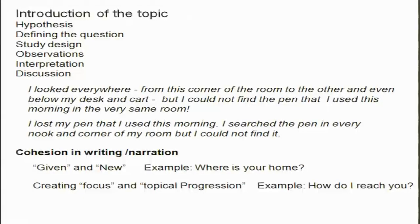The second important element is creating focus and topical progression. It is like directions — once you know where someone's home is, if you ask how to reach it, they say: come to the movie theater, go straight, find another mall, take a right turn, find a tall house with red paint, and next to it is a small house — that is my home. These are ways by which you narrate. This is called topical progression, and it is very essential to keep the reader interested in what you are writing.